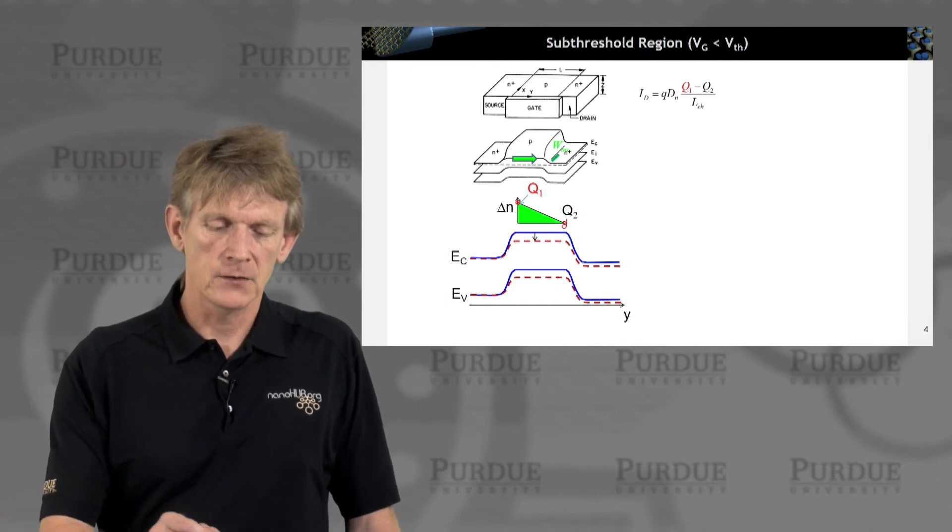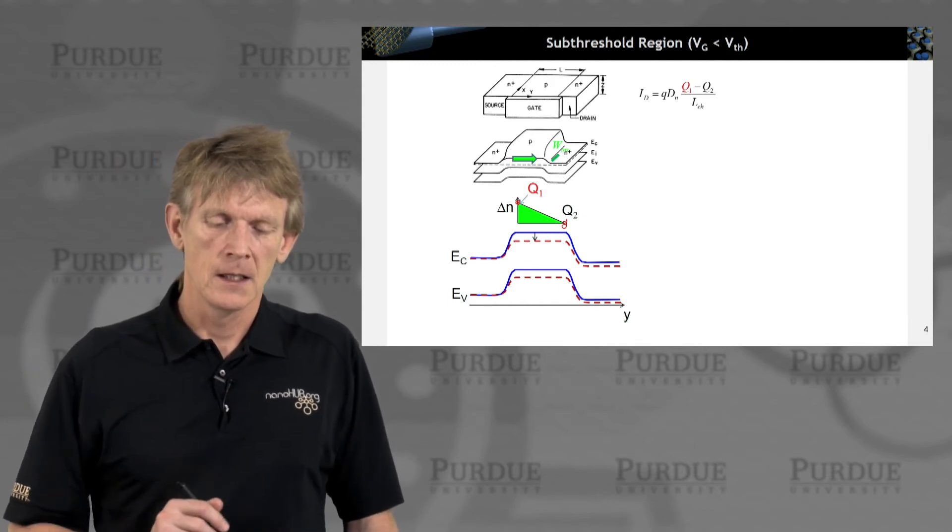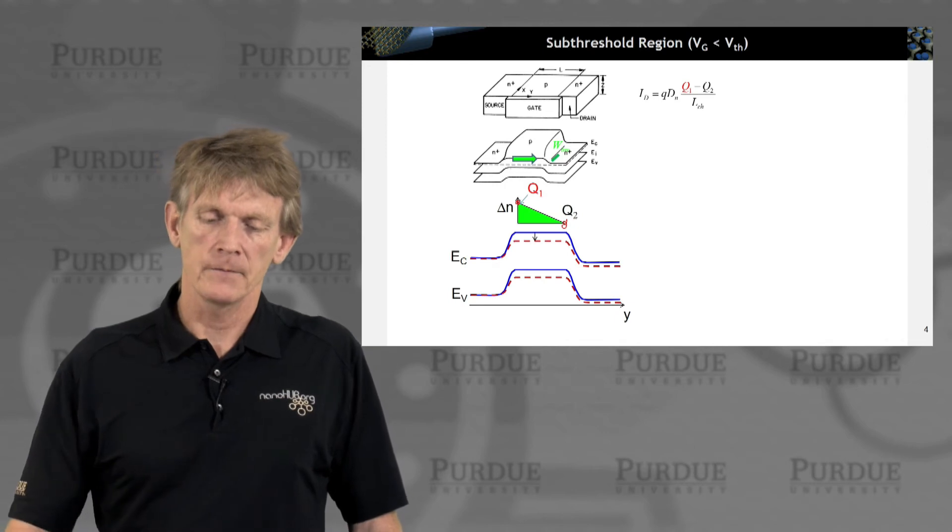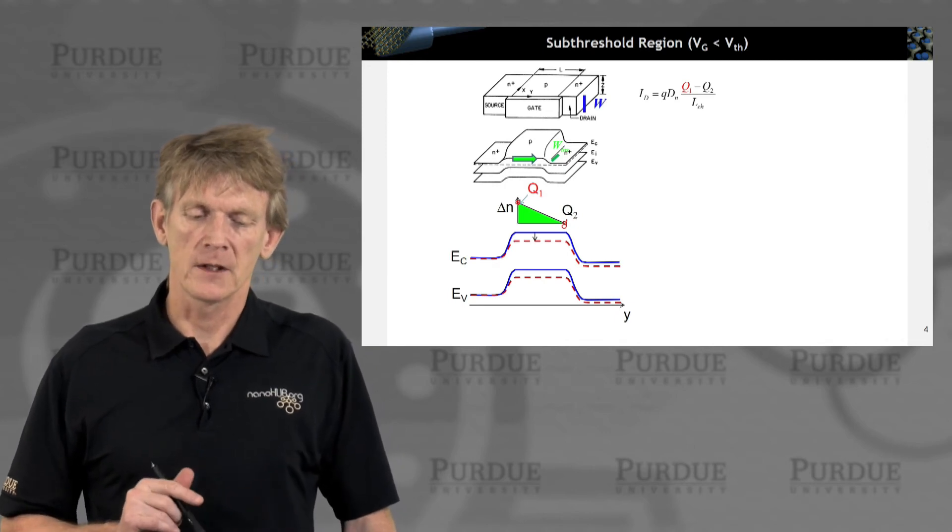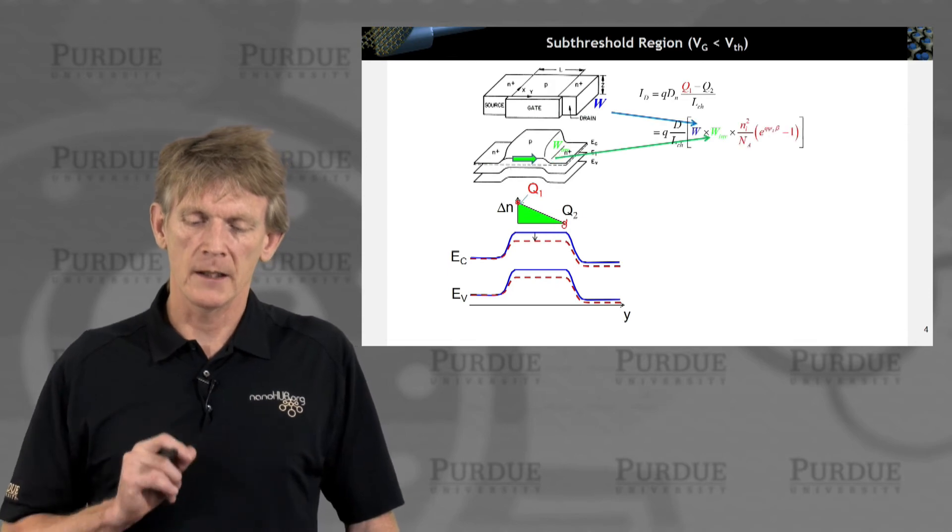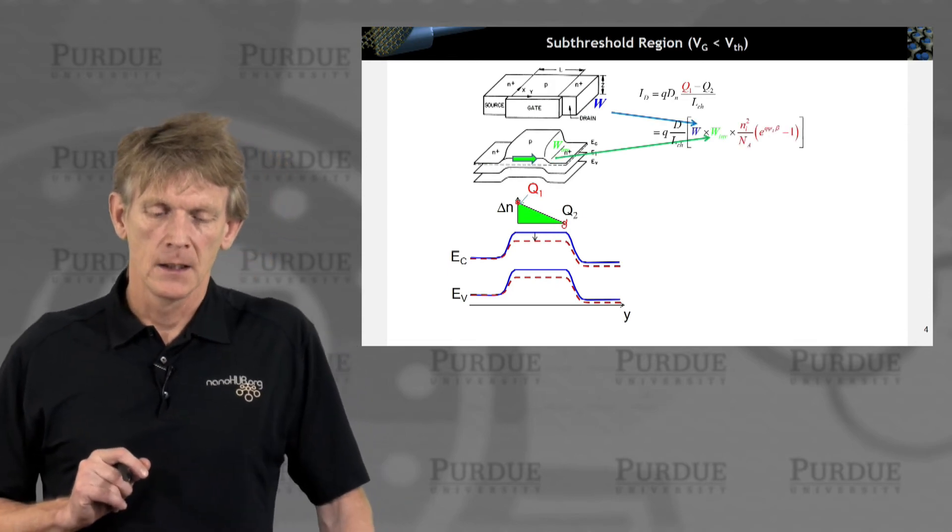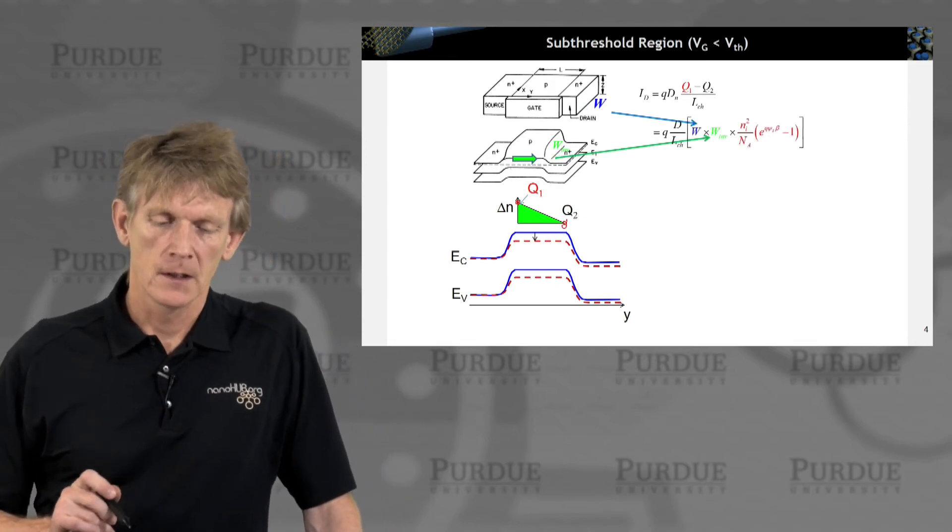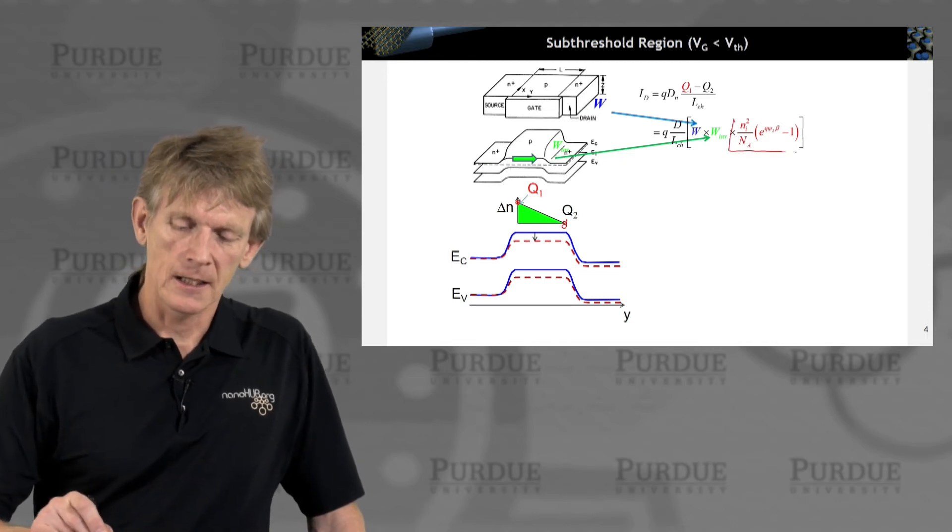This channel will have a certain inversion width. And the transistor has an overall width. And we can multiply those to get the charge.